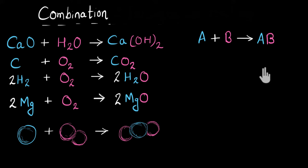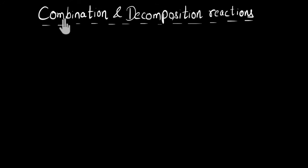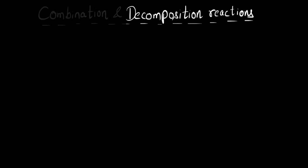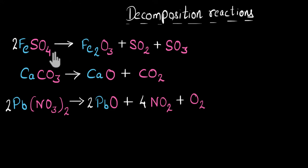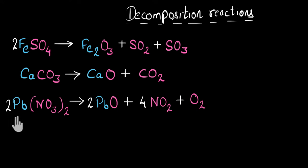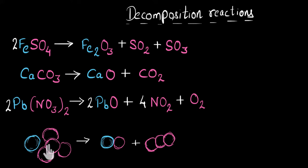Now, decomposition reaction is totally opposite of combination reaction. In combination, multiple reactants combine to give one single product, whereas in decomposition, one single reactant breaks down — decomposes — into multiple products. For example, iron sulfate breaks down into iron oxide, sulfur dioxide, and sulfur trioxide. Similarly, calcium carbonate is breaking down, and lead nitrate is decomposing. At a molecular level, a big molecule is breaking down into multiple smaller products.